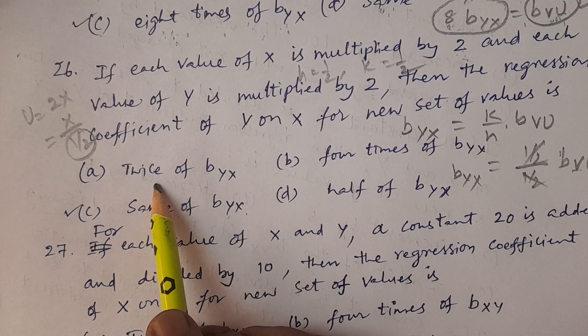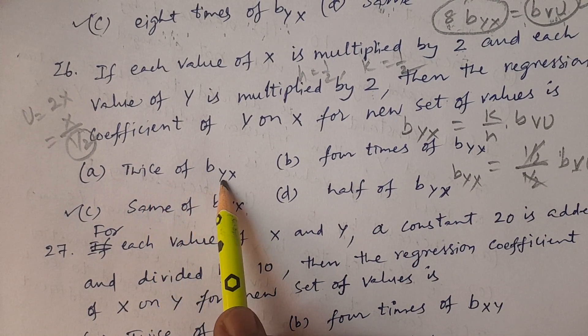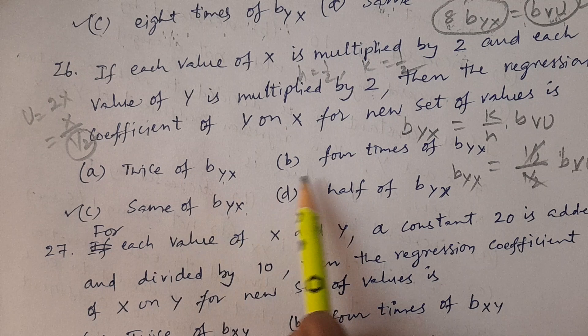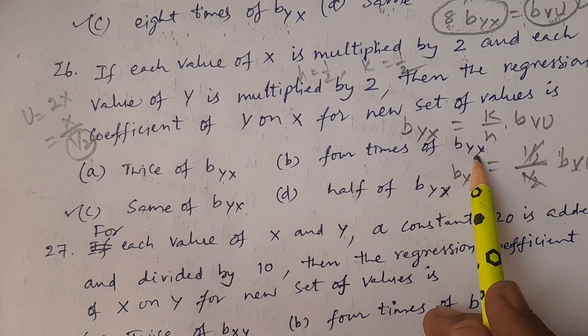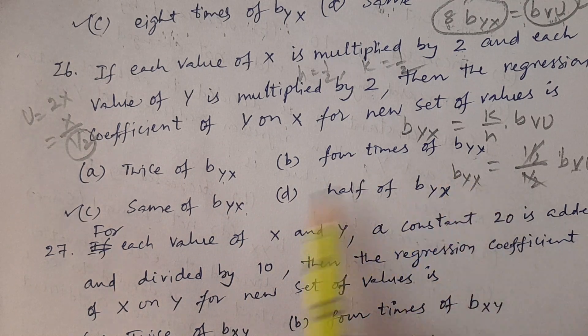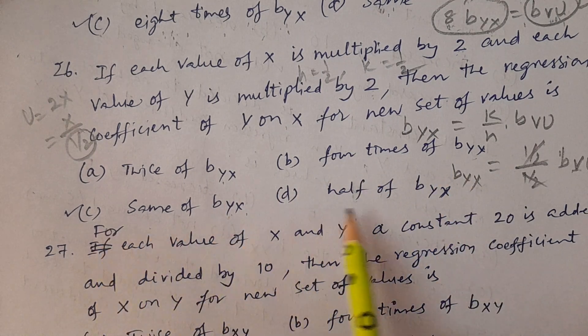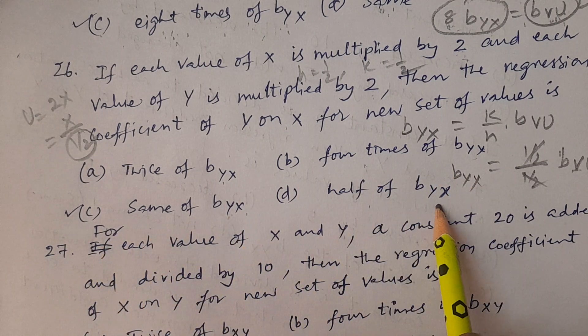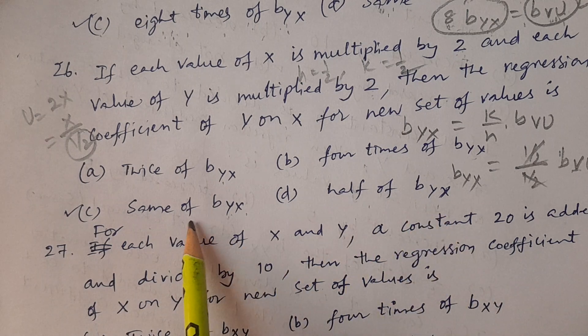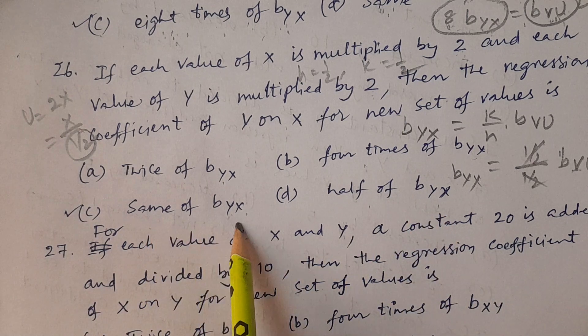Now you see the answers: twice of byx — no. Four times of byx — no. Same of byx — yes, right. Half of byx — no. The answer is same of byx.